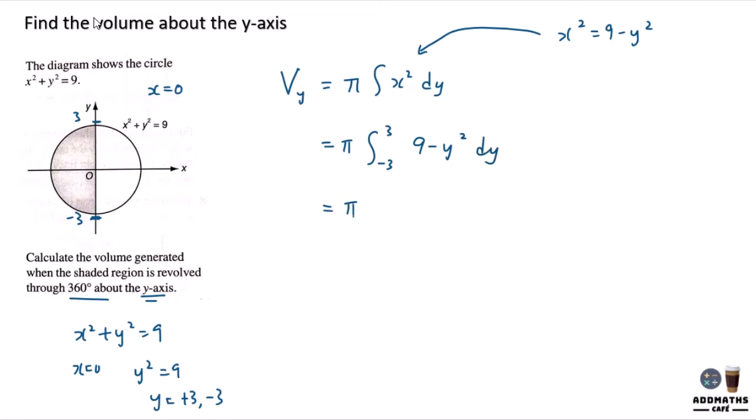Then integrate this equation and you will have 9y minus y cubed over 3, and apply negative 3 to 3 into this integral, this definite integral.